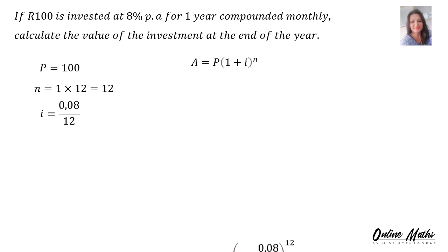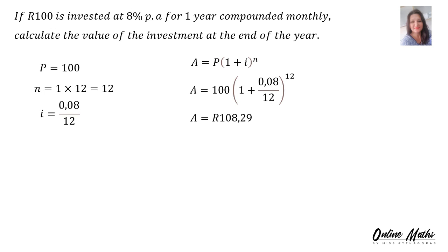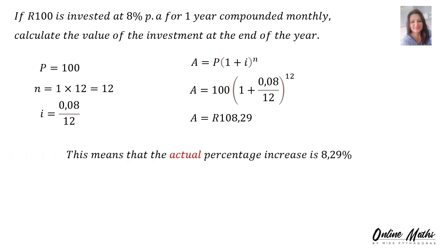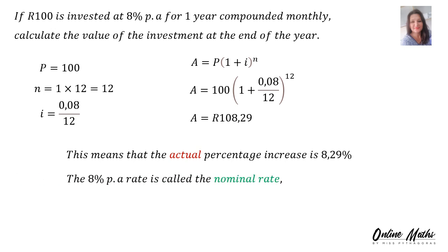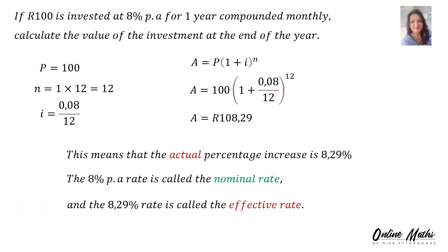Into the formula: A equals P, which is 100, bracket 1 plus 0.08 divided by 12, raised to the power of 12. When you work that out, A is 108.29. This means the actual percentage increase is 8.29%. The 8% per annum rate is called the nominal rate, and the 8.29% rate is called the effective rate.